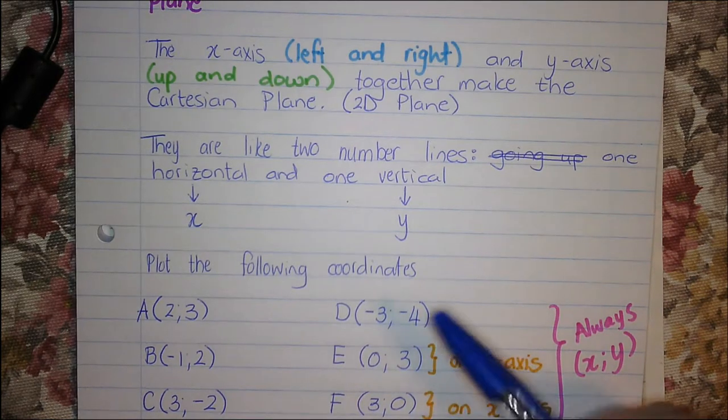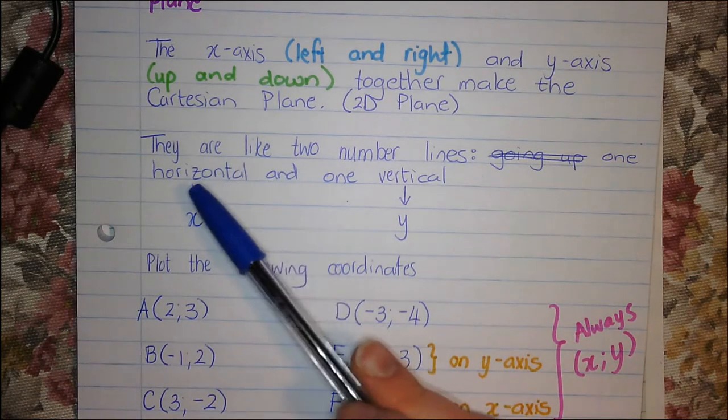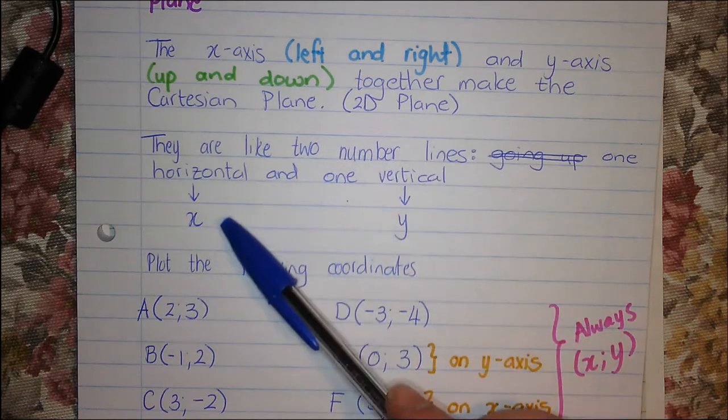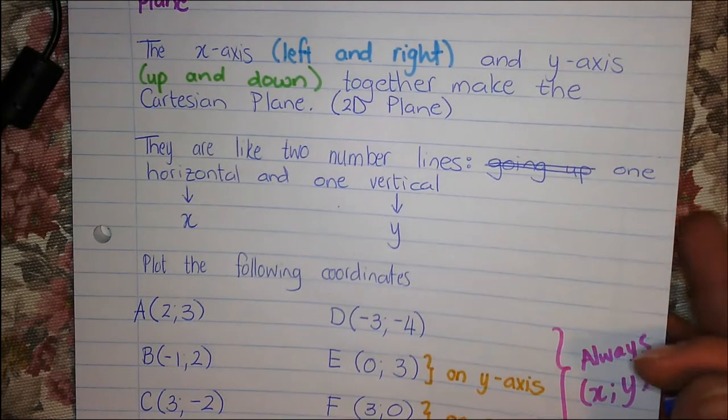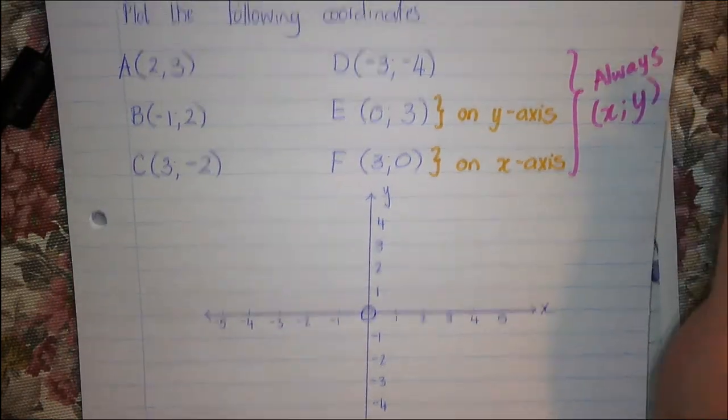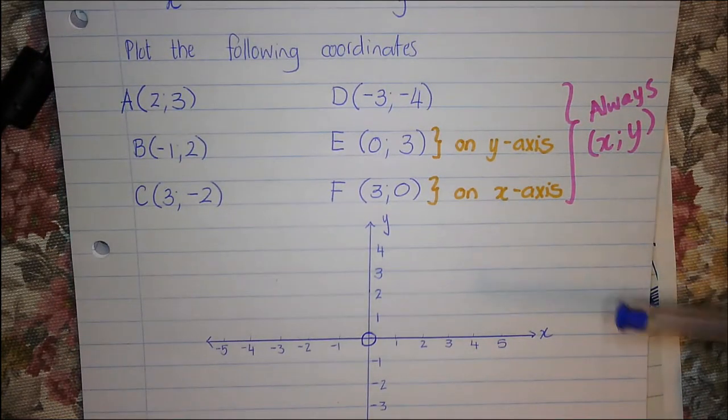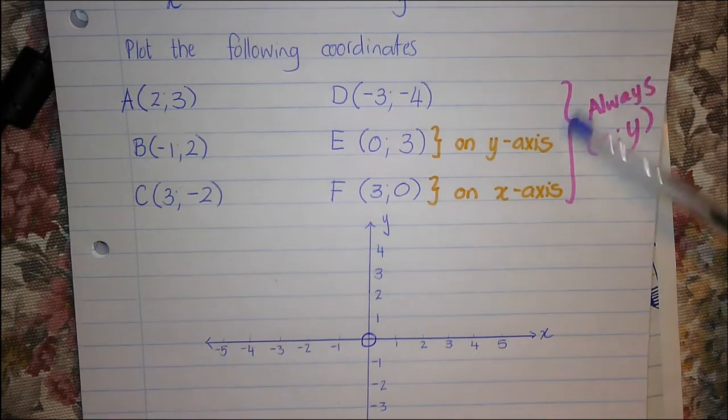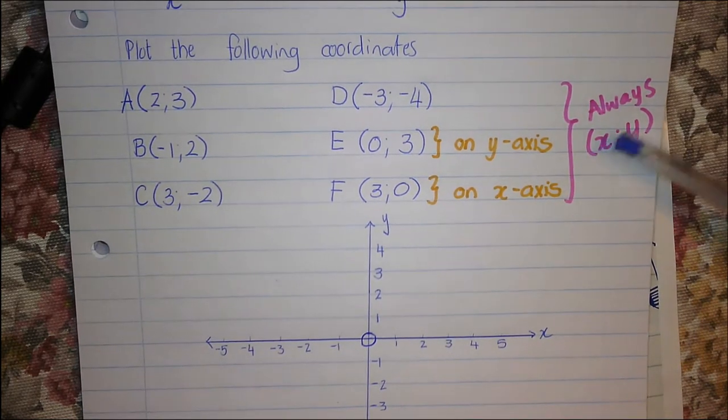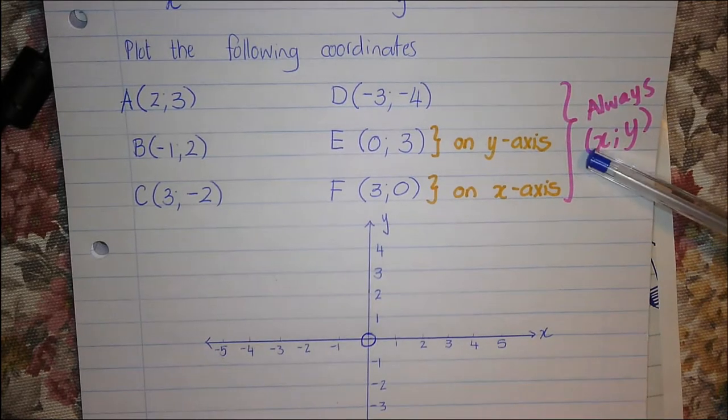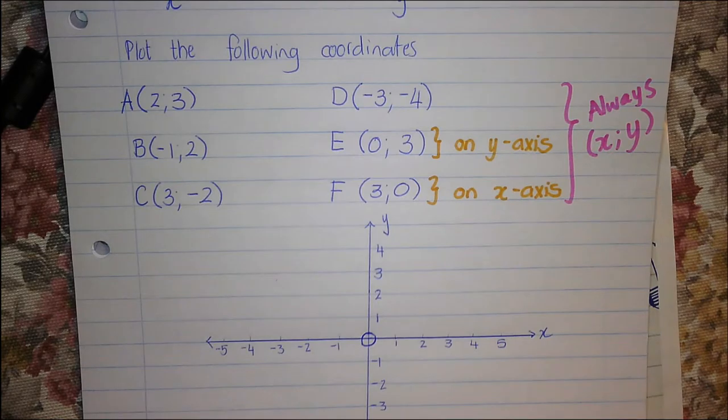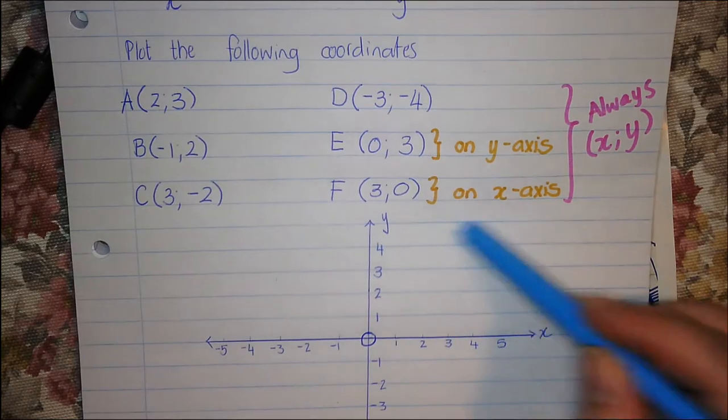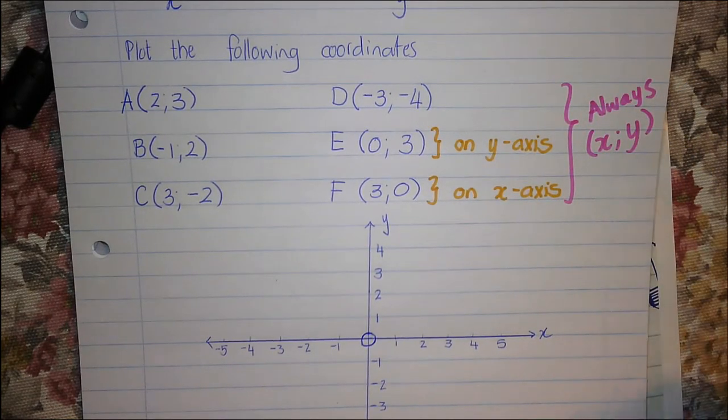We already mentioned that there are like two number lines. The horizontal one is the x-axis, the vertical one is the y-axis. So let's plot these coordinates. Now there are a few things that you need to remember here. We always want the coordinates in the form x, then y. It's always x-coordinate first and then y-coordinate. If you struggle to remember that, think alphabetically it's x, y, z.